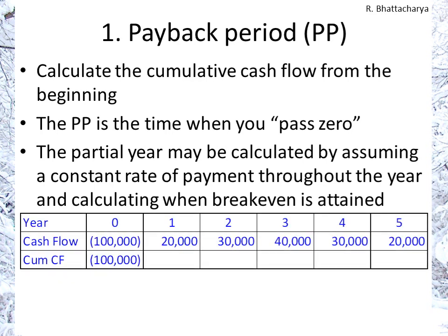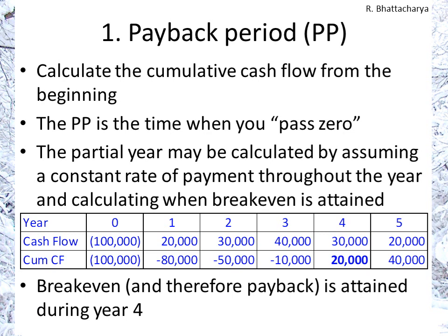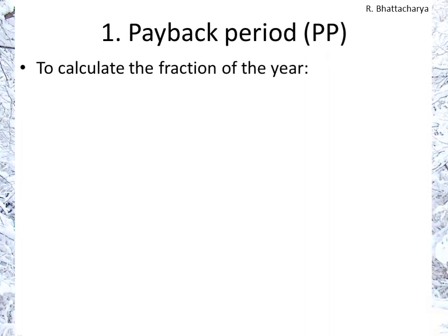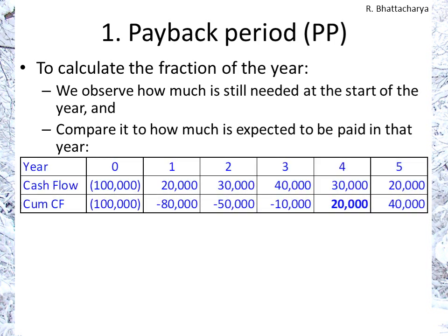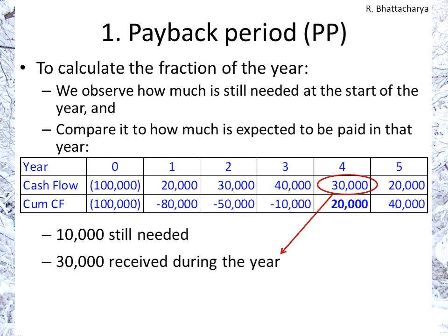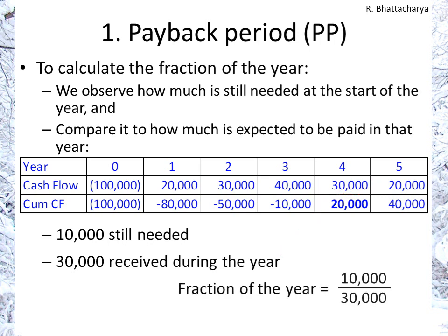Let's take an example. We start off with minus 100,000. At the end of year one, we'll be left with 80,000 to recoup. End of year two, you can see 50,000. Year three, you'll be at 10,000. And you can see you're going to cross zero and break even in year four, ending with 20,000. At the end of the project, we'll have 40,000 more than what we invested initially. The breakeven is contained sometime during year four. To calculate the fraction of the year, we need 10,000 at the start of that year, and we will receive 30,000 during that year. So the fraction of the year will be one third, and therefore the payback period is going to be three and a third years.